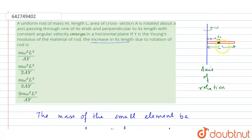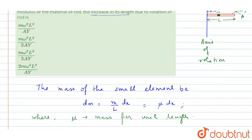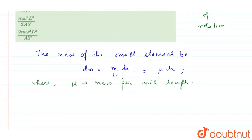As given in the question, this rod has length L, mass M, and cross-sectional area A. These are the key quantities we need to use in our solution.